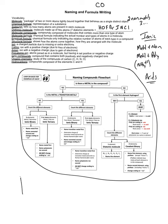Another way to remember the diatomic elements is on the periodic table — these elements form the shape of a seven. That gives you nitrogen, fluorine, chlorine, bromine, and iodine. Then you just have to remember that hydrogen is diatomic as well, so it's the number seven with hydrogen as another way of remembering the diatomic elements.